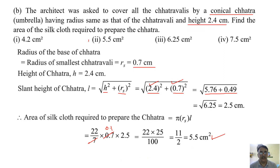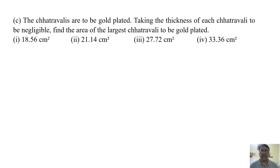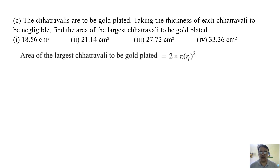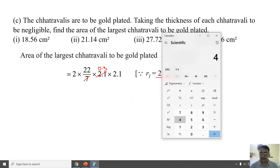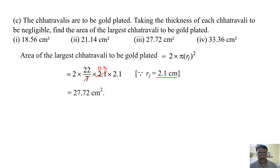Third question: the chatra valleys are to be gold plated. Taking the thickness of each chatra valley to be negligible, find the area of the largest chatra valley to be gold plated. The area of the largest chatra valley is 2 × π r², covering both sides, and it is in the shape of a circle. Radius of the largest is 2.1 centimeters. So: 2 × 22/7 × 2.1 × 2.1 = 44 × 0.3 × 2.1 = 27.72 centimeter square. The correct option is the third one.